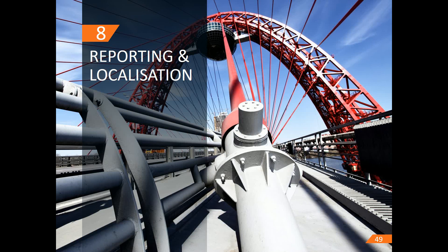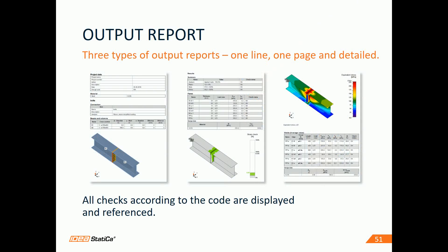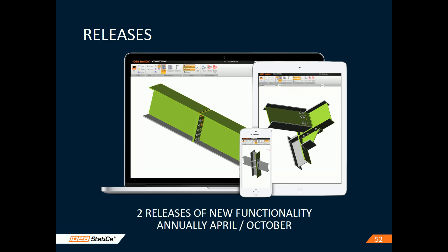The whole calculation process comes down to the report. IdeaStatica supports several design codes, with various sets of material types, cross-sections, and bolts. Schemes of drawings are available. You can choose from three types of report: one line, one page, or detailed. All checks according to the code are displayed. Suggestions and requests from our customers get implemented continuously — we do two releases of new functionality every year, in April and October.